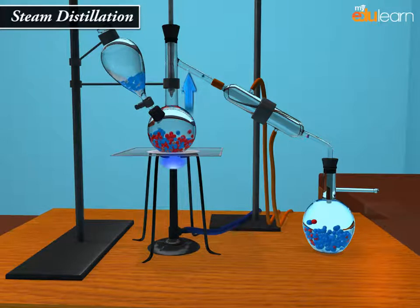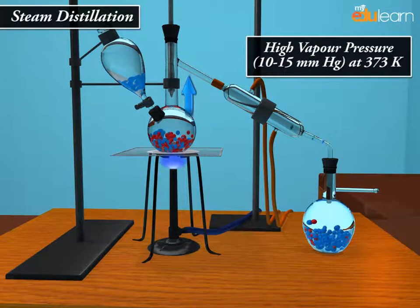c) possess a high vapor pressure, 10 to 15 mm Hg at 373 Kelvin, and d) contain non-volatile impurities.